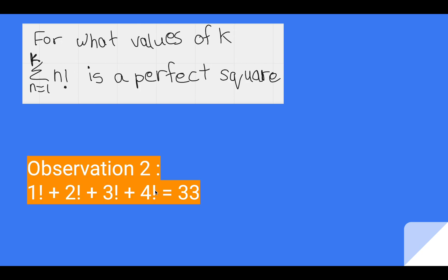Second observation we make is a fact: 1 factorial plus 2 factorial plus 3 factorial plus 4 factorial is 33. 1 plus 2 plus 6 plus 24. Units place to note here is 3.